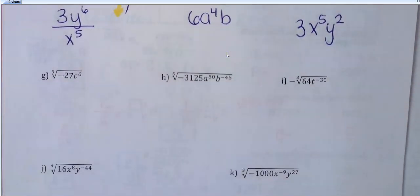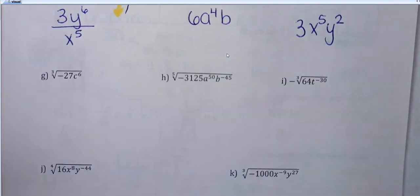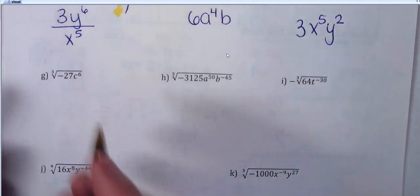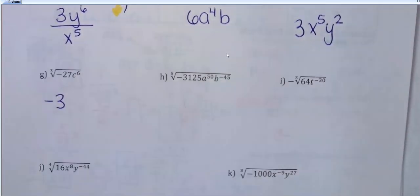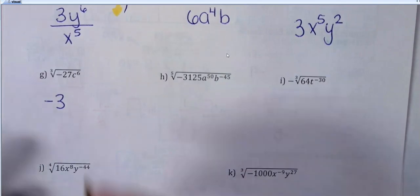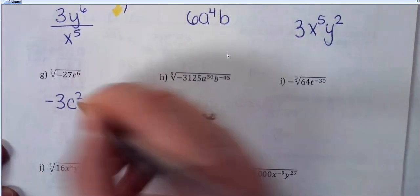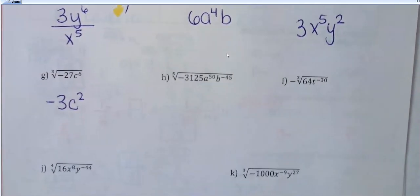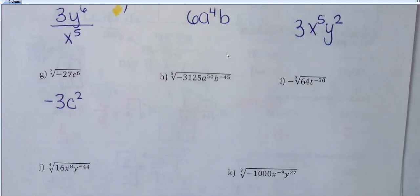Odd root, negative number. So cube root of negative 27 is just going to be a negative. We are not putting this in the bottom of a fraction because it's just a negative number — it's not a negative exponent. So it would just literally be negative 3. And then 6 divided by 3 for my variable gives c squared. No fraction there. Sometimes people get tripped up — a negative number is not a negative exponent that you need to move.